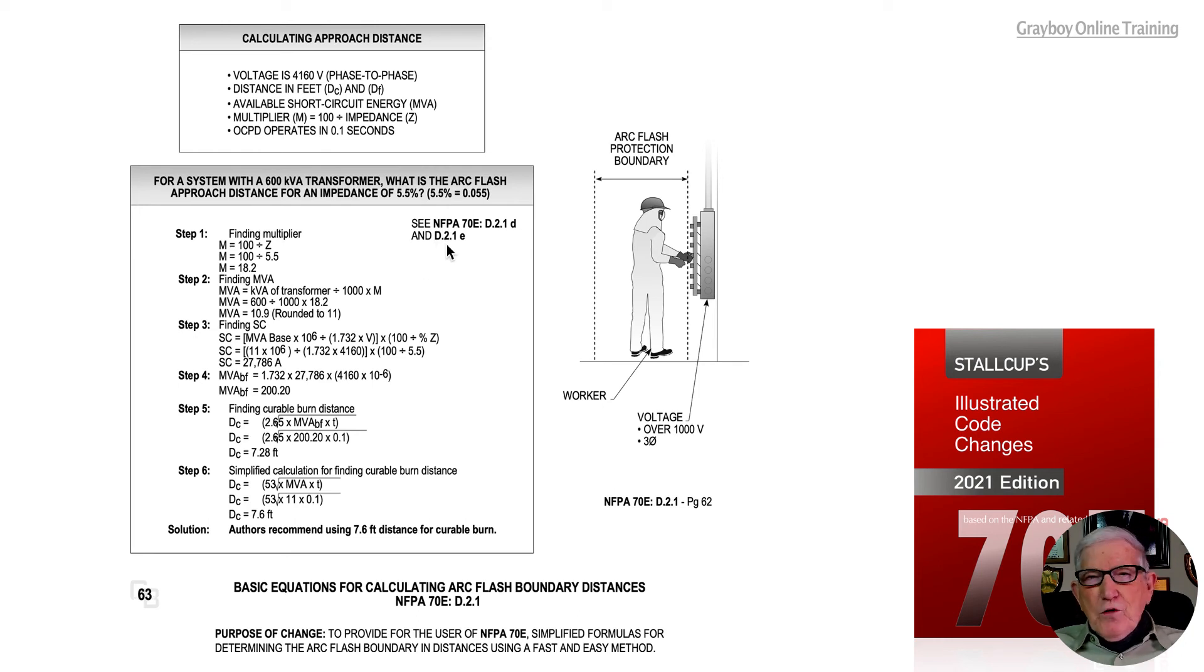Step one, we're going to find our multiplier. We'll take 100 divided by the impedance of the transformer, 5.5. 100 divided by 5.5 gives us a multiplier of 18.2.